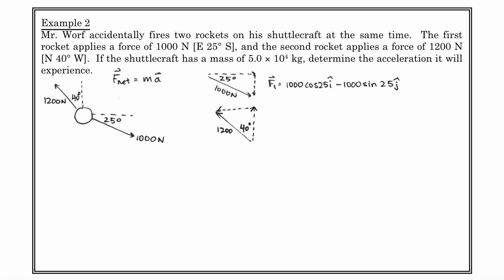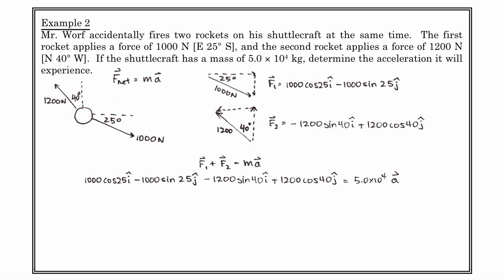For the second force of 1,200 newtons, we get negative 1,200 sin40 i-hat, because it's in the negative direction, plus 1,200 cos40 j-hat because it's up. The sum of the forces — F net — equals F1 plus F2 equals MA. When we sum these two forces: 1,000 cos25 i-hat minus 1,000 sin25 j-hat, minus 1,200 sin40 i-hat, plus 1,200 cos40 j-hat.